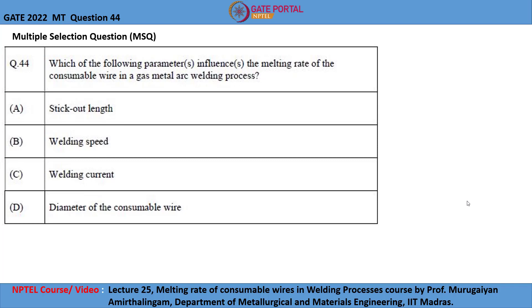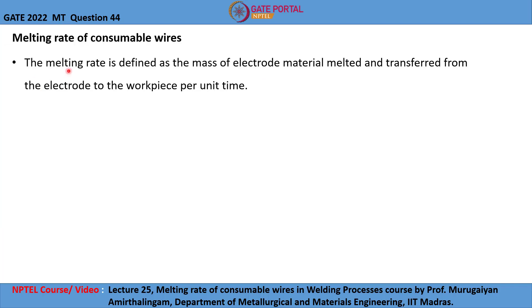Let us look at what melting rate means. The melting rate is defined as the mass of the electrode material melted and transferred from the electrode to the workpiece per unit time.